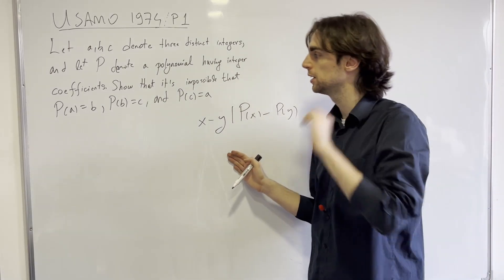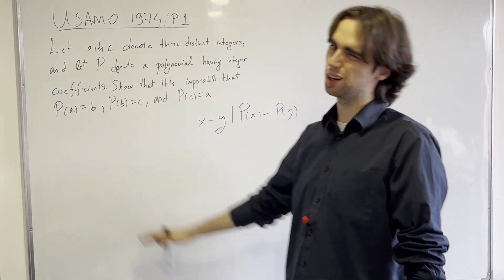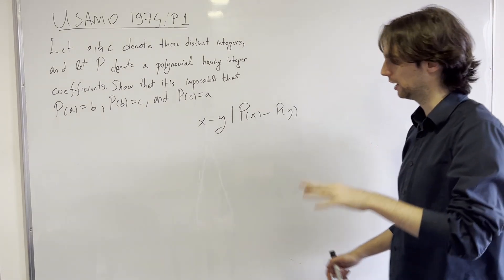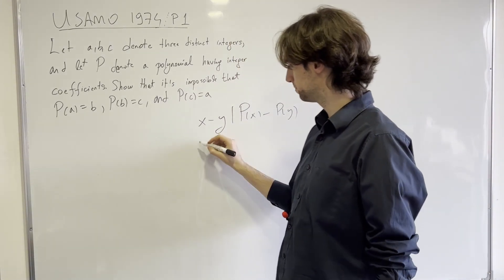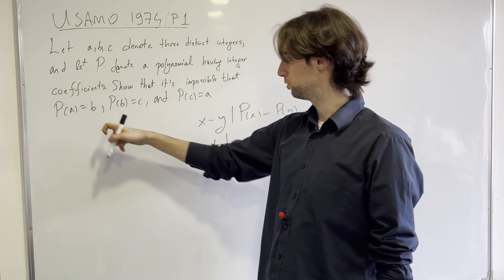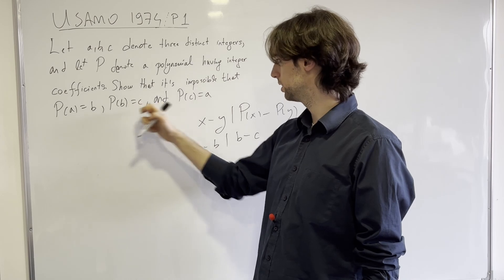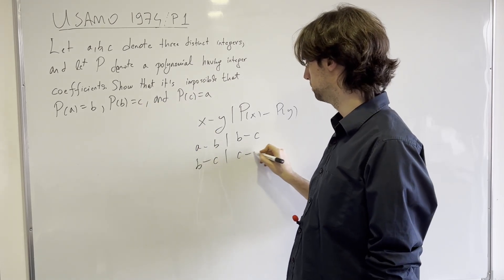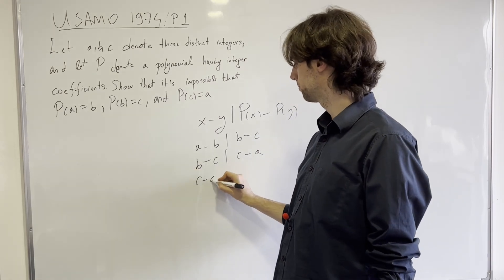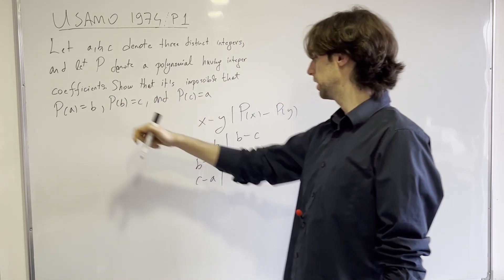With this in mind, what would we have for our problem statement? Putting in A and B: A minus B divides p(A) minus p(B), which equals B minus C. We'd get B minus C divides C minus A, and we'd get that C minus A divides A minus B.